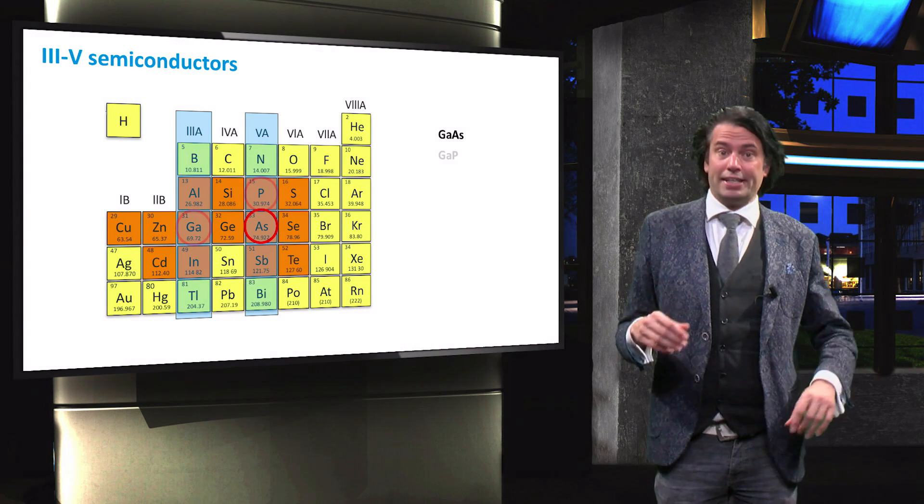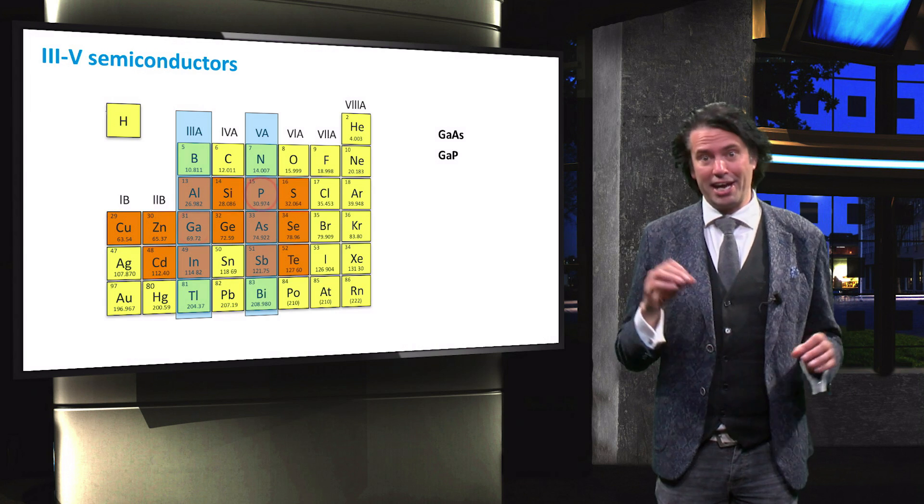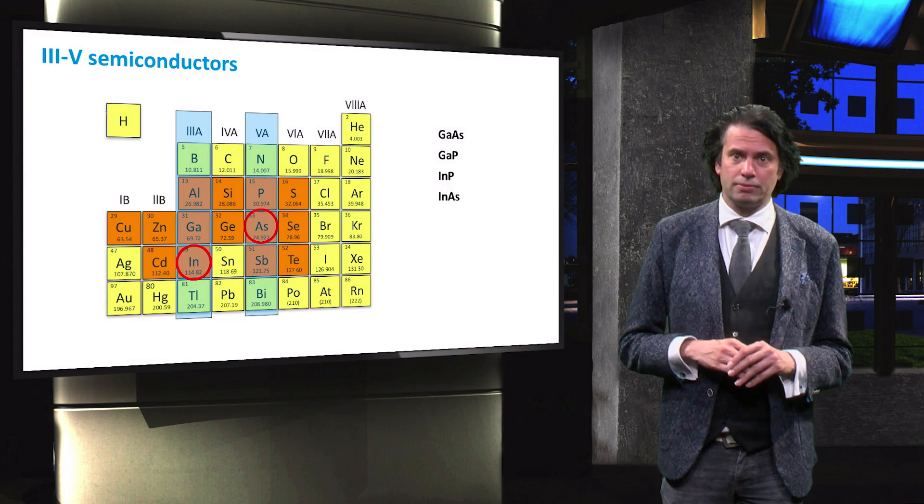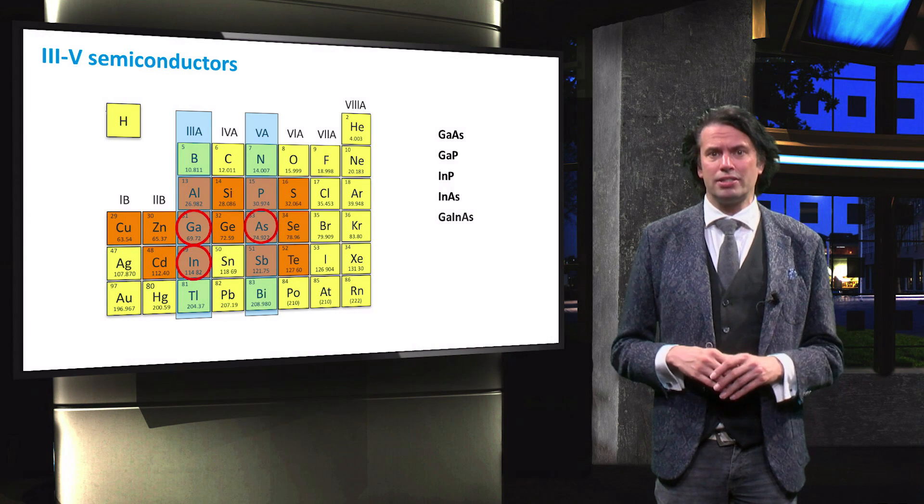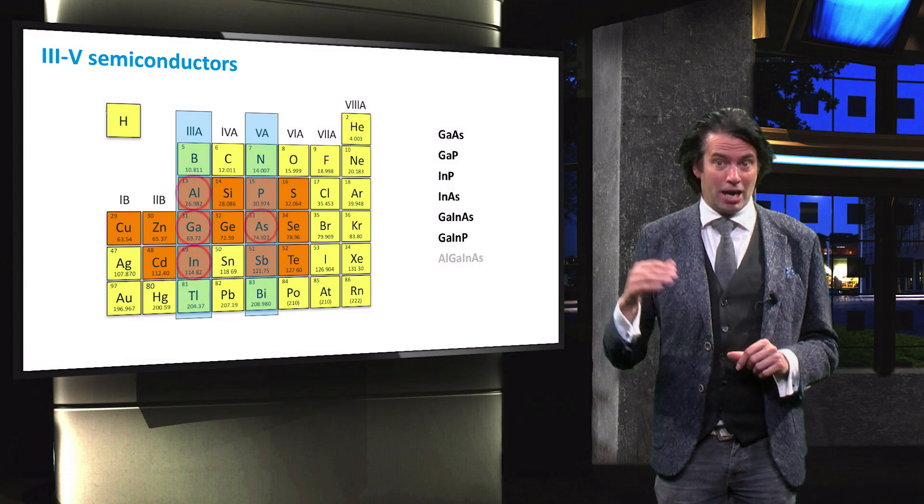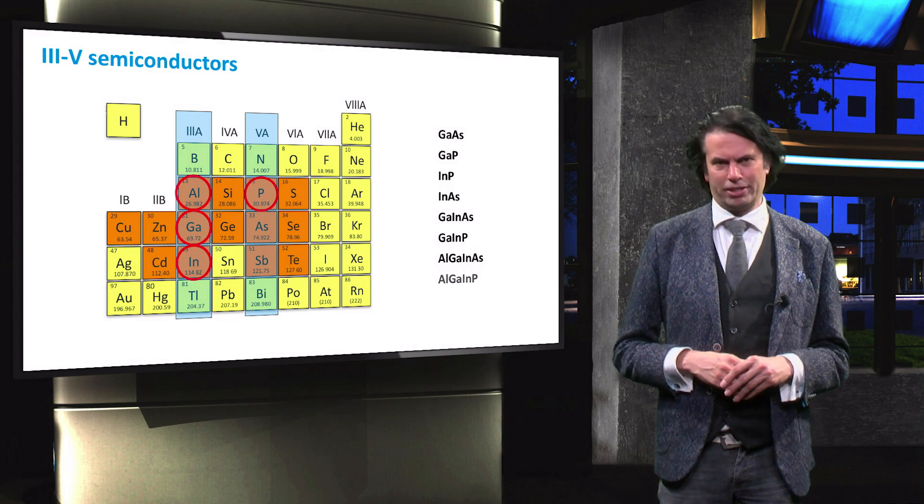Examples include gallium phosphide, indium phosphide, indium arsenide, gallium indium arsenide, gallium indium phosphide, aluminium gallium indium arsenide, and aluminium gallium indium phosphide.